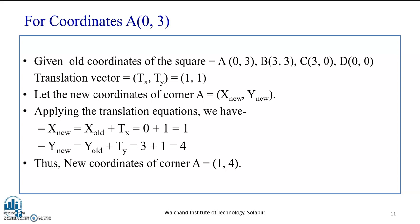You have to solve this problem in the given stepwise approach. Given all coordinates of the square: A(0,3), B(3,3), C(3,0), D(0,0). Obviously, the translation vector given in the problem, that is Tx and Ty, is one unit for both x and y. Now, let the new coordinates of corner A be x-new and y-new. Applying the translation equations, we have x-new equal to x-old plus Tx, that is 0 plus 1. Y-new is equal to y-old plus Ty, that is 3 plus 1, we get 4. Thus, the new coordinates for corner A of the square is (1, 4).